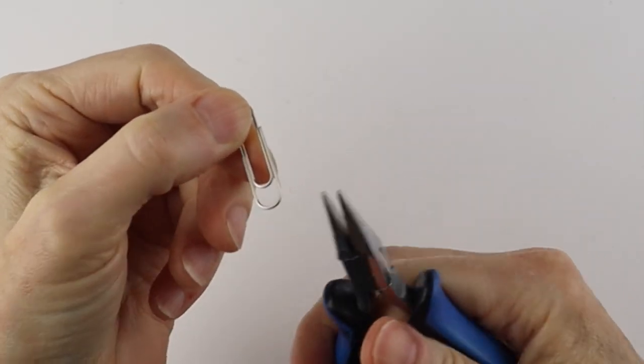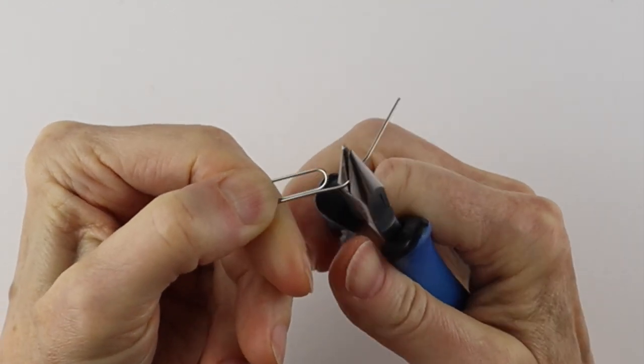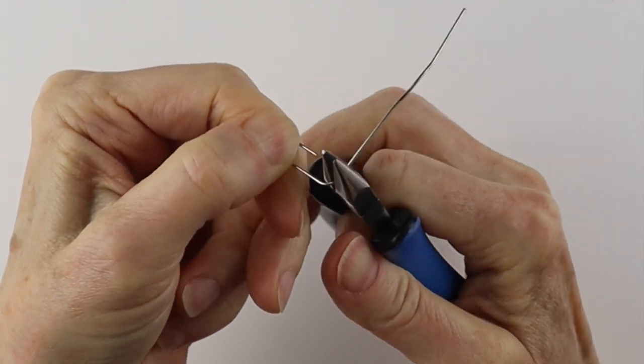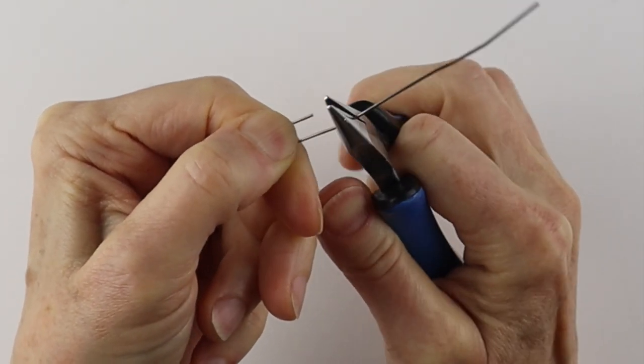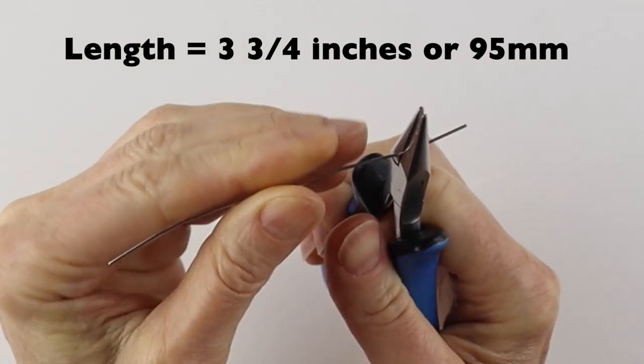We always start with opening up the paperclip with our flat pliers. You can do this by hand, but it's easier to do with the pliers. Just go slowly and pinch it along as you go. You just want to get it as straight as you can.